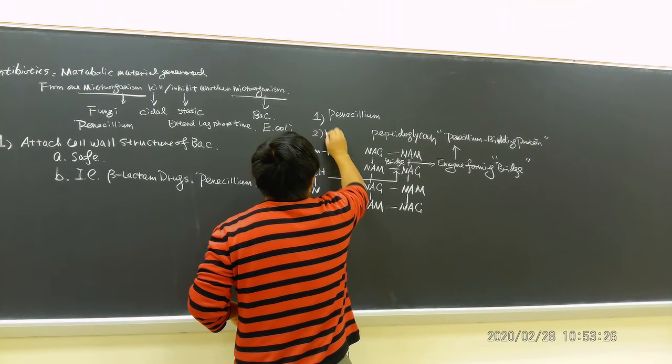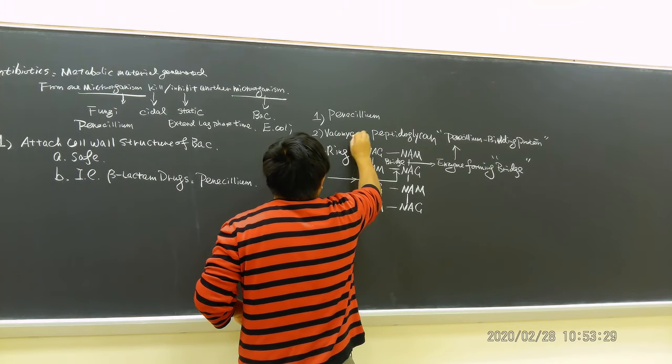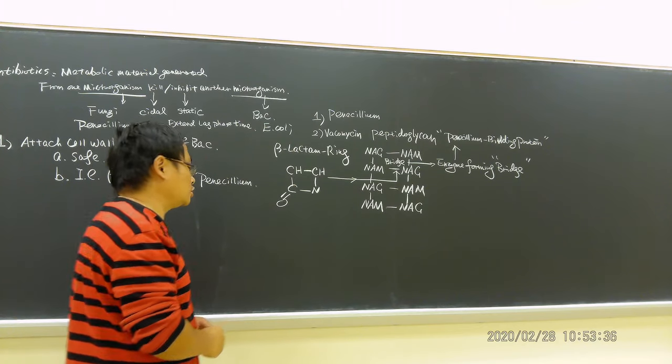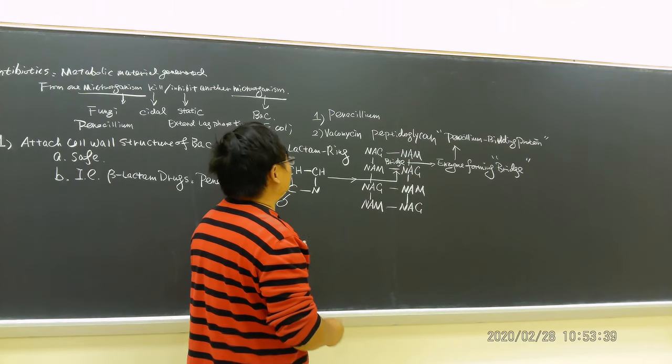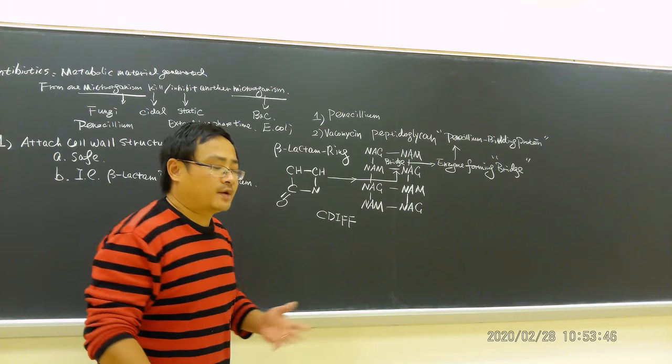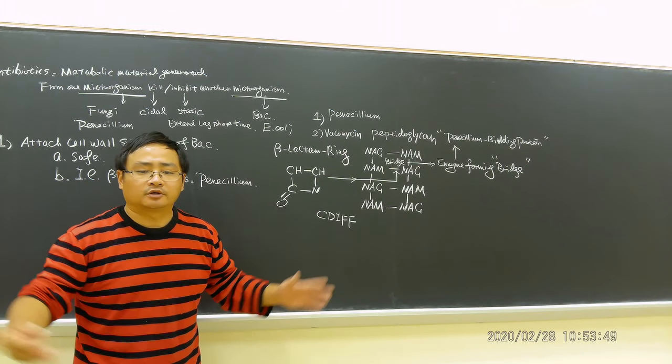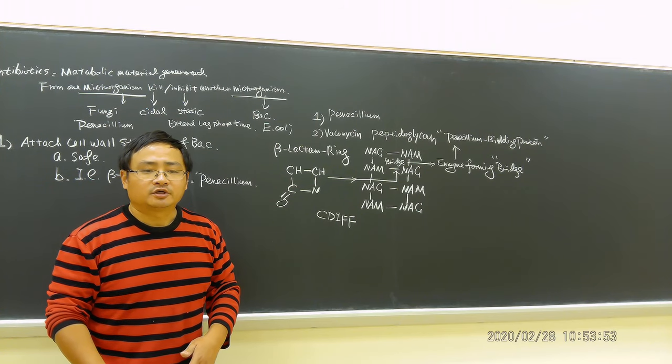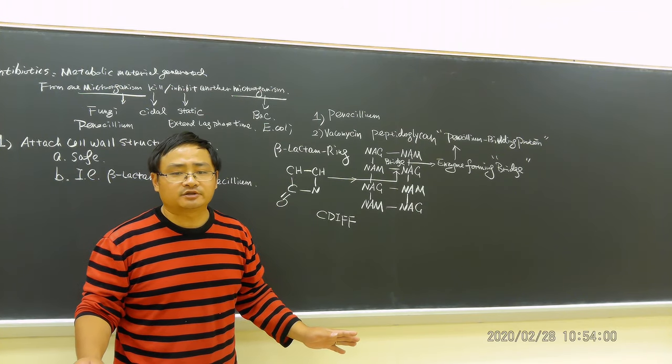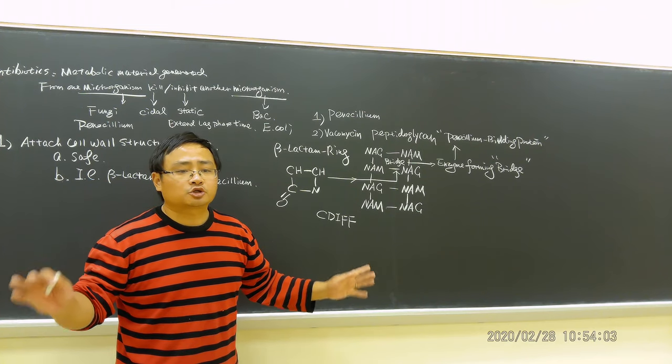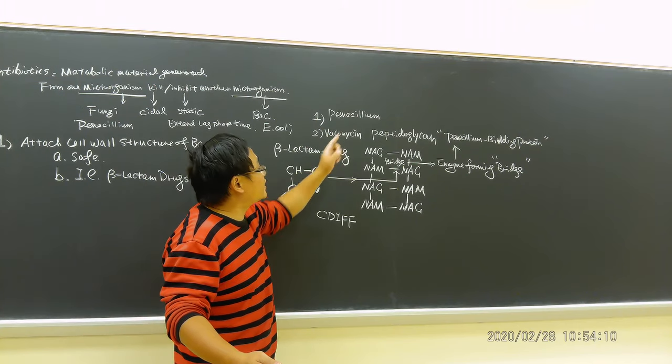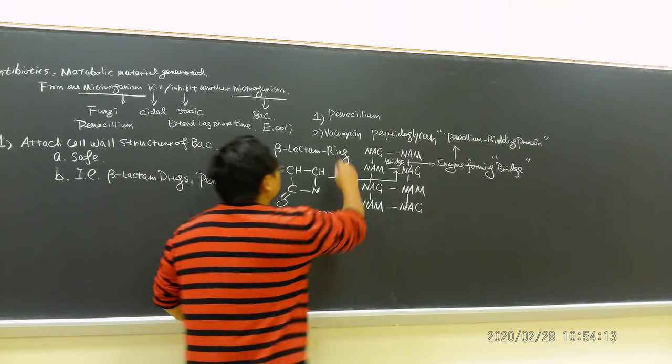Now number two, we're going to talk about vancomycin. Remember when I talked about CDI, which is Clostridium difficile, we said a patient using antibiotics too long, about a week, they have watery diarrhea, pseudomembranous colitis. Because intensive use of antibiotics killed all normal bacteria in the intestinal area, and Clostridium difficile starts to dominate. We should not use penicillin, we should use vancomycin.